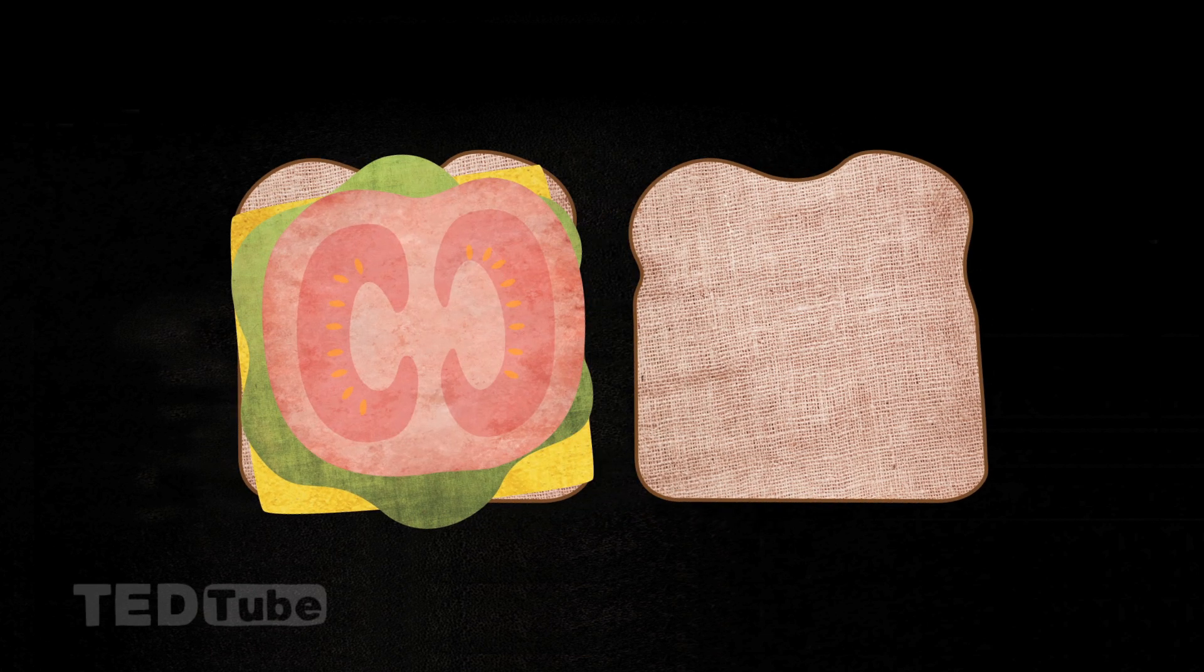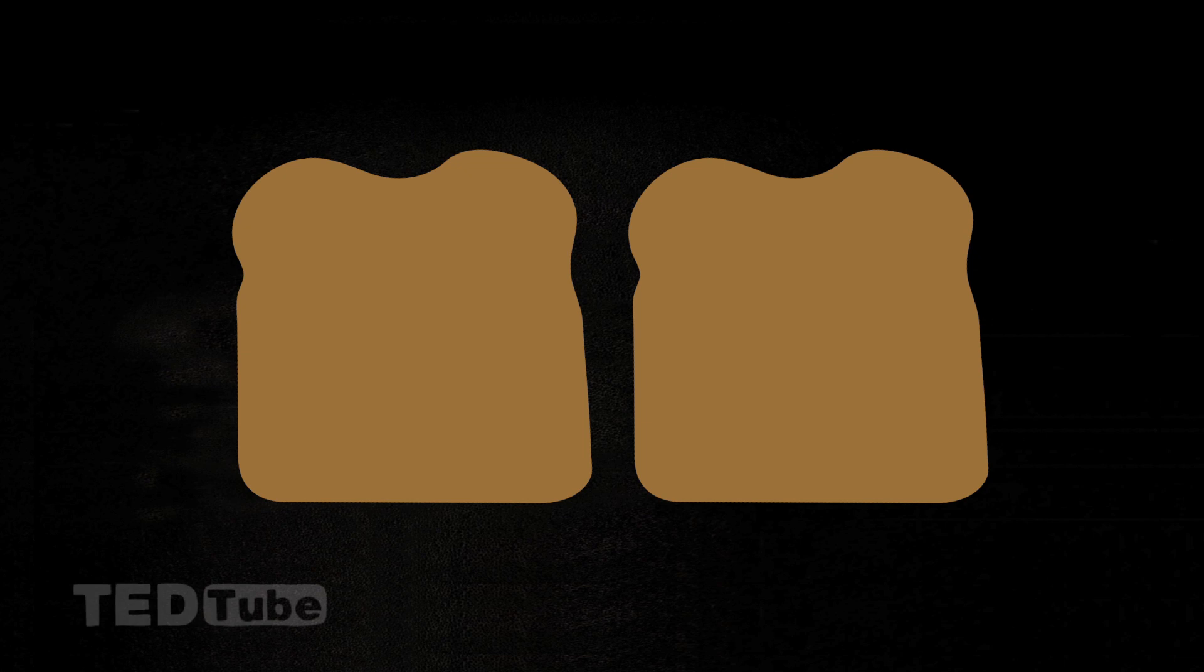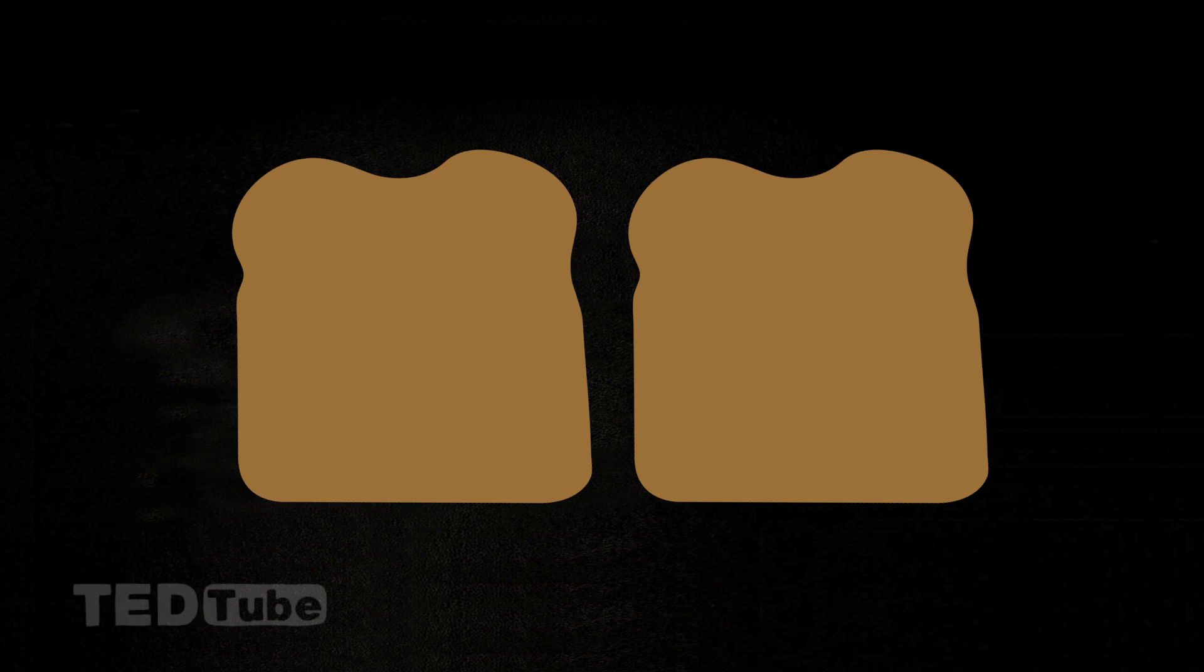But if you open the sandwich and place the two slices side by side, you get twice the surface area. The Gorter and Grendel experiment is basically the same idea.